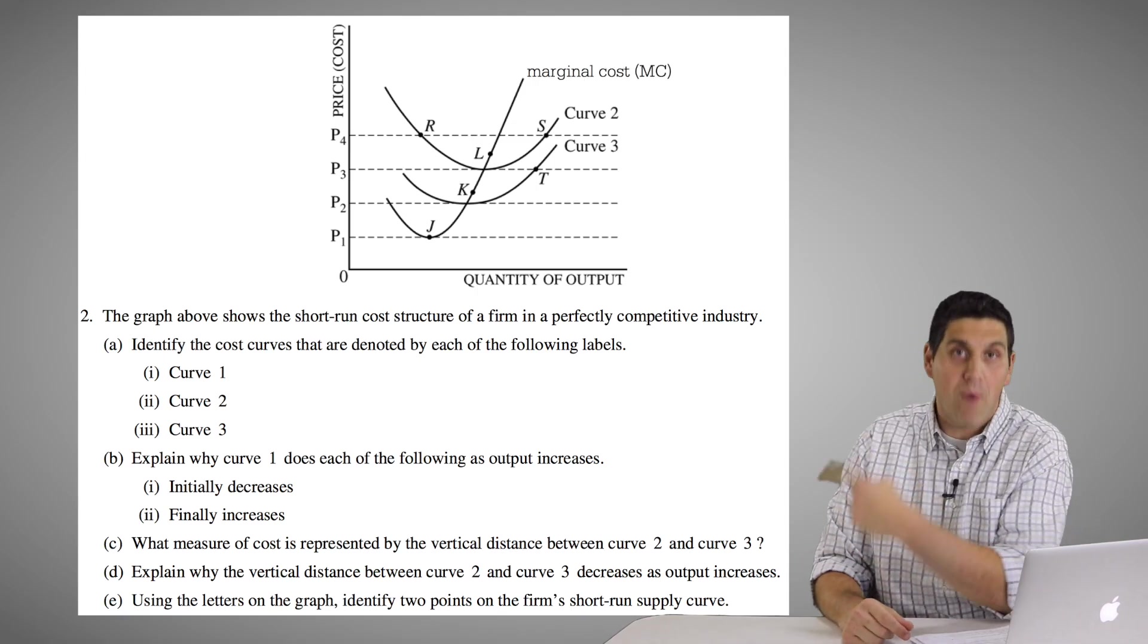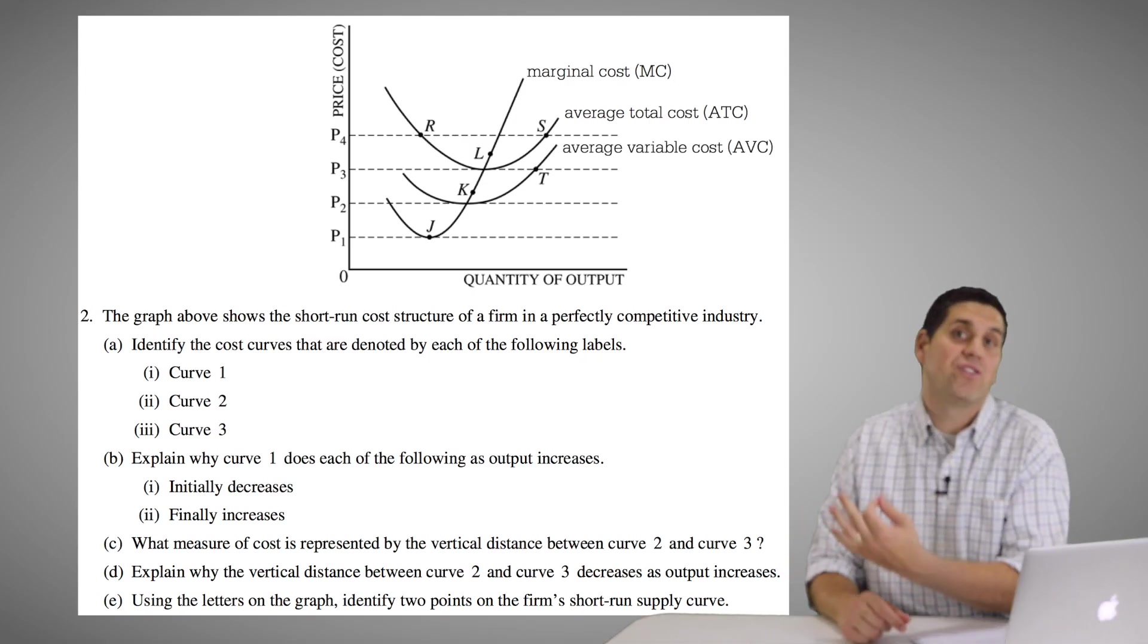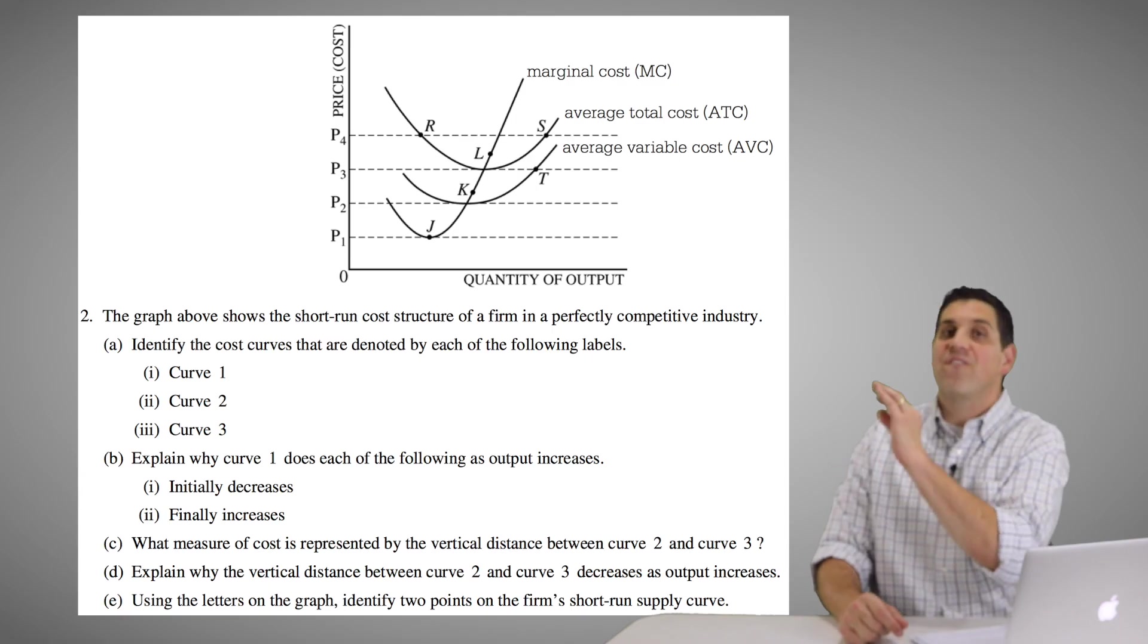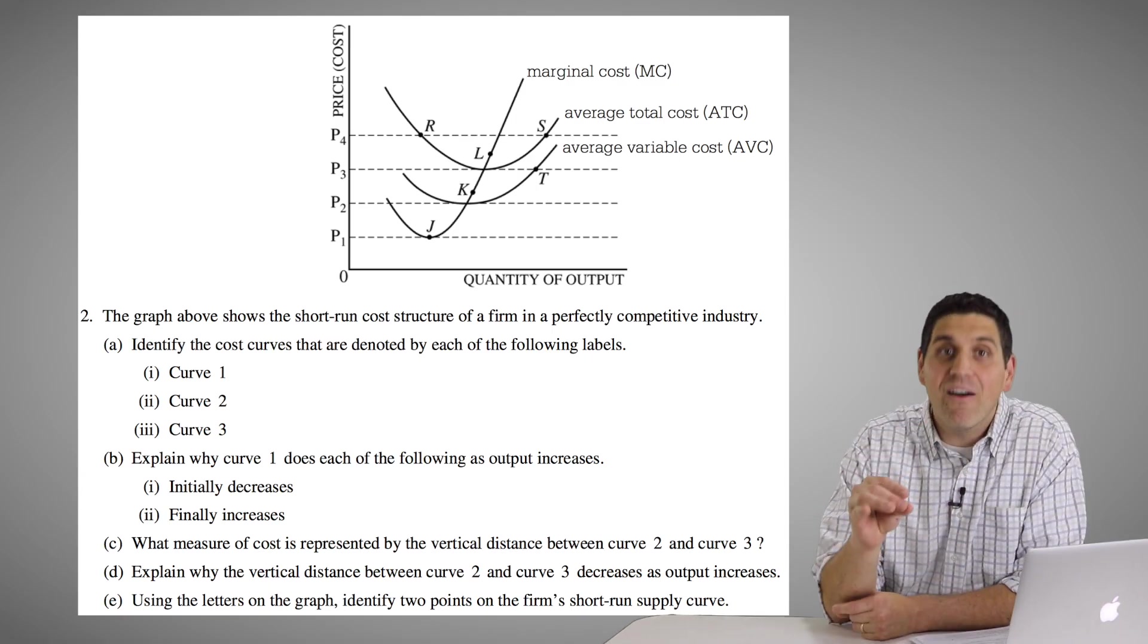Well, curve one is marginal cost, curve two is the average total cost, and curve three is the average variable cost. Note, this is not the fixed cost, or the variable cost, or the total cost. We're talking about average cost curves.